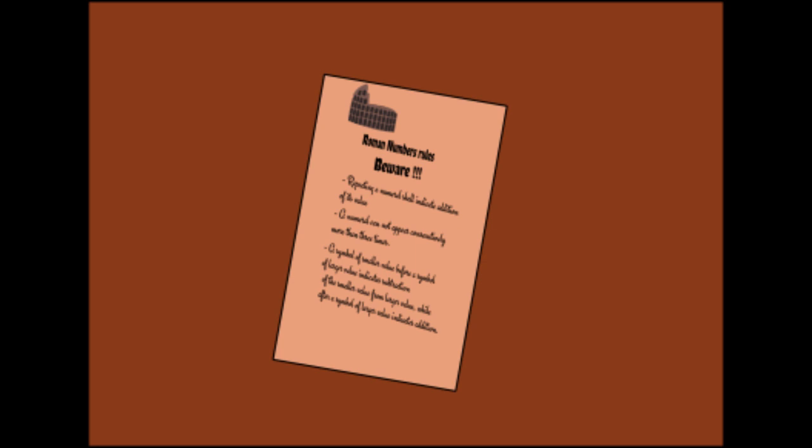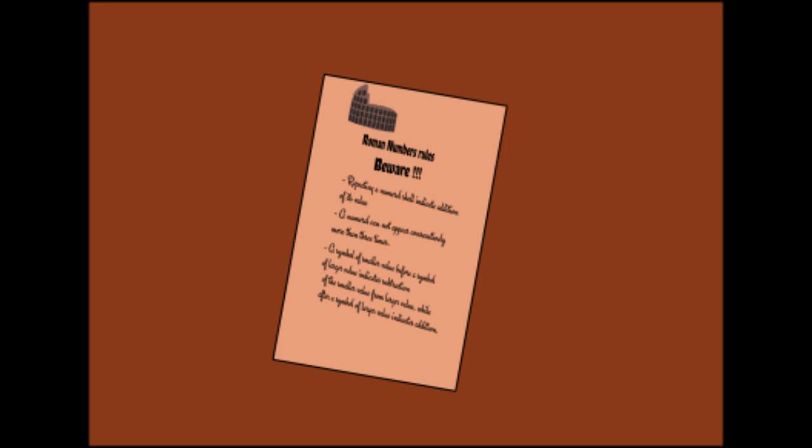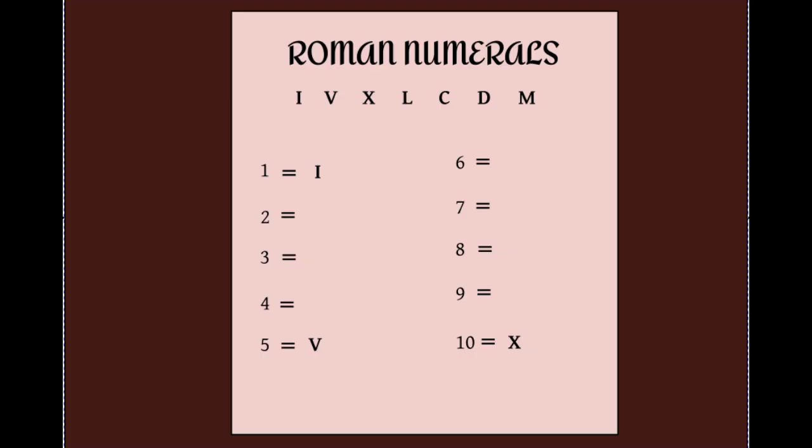First, a symbol could be repeated which indicated addition of its value. But you couldn't repeat a symbol consecutively more than three times. However, if you wrote a symbol of a smaller value before that of a higher one, it meant subtracting its value from the higher value. But if you wrote it after the symbol of a higher value, it meant adding its value to the symbol of the higher value. So, with our seven letters and three rules, let's count from one to ten in Roman.